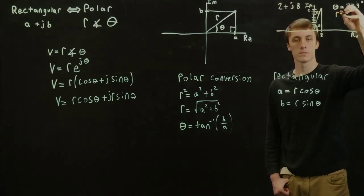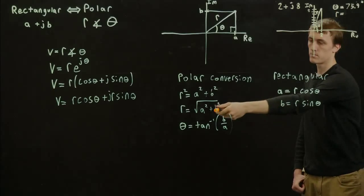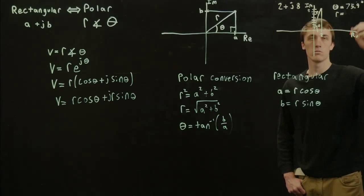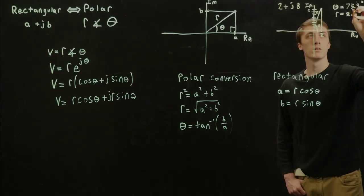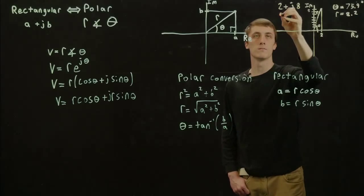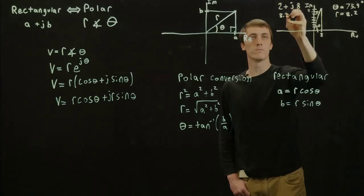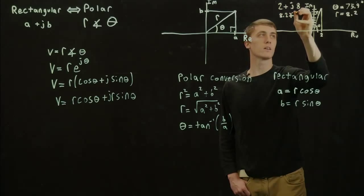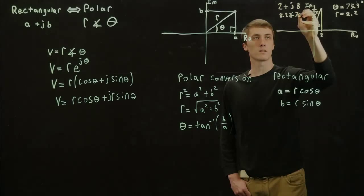And R, using A squared plus B squared, will be 8.2. So we can write that in the form of 8.2 angle 76 degrees.